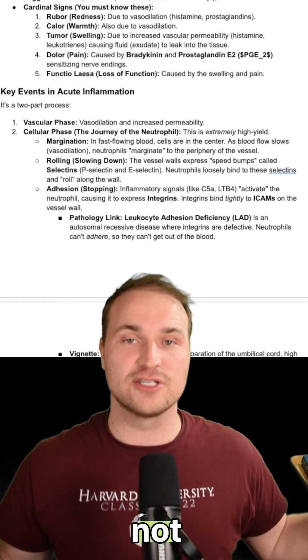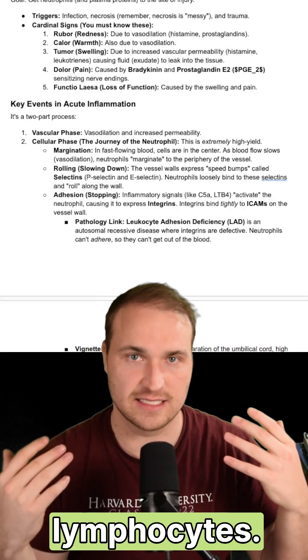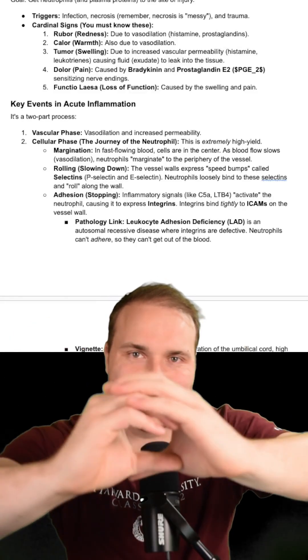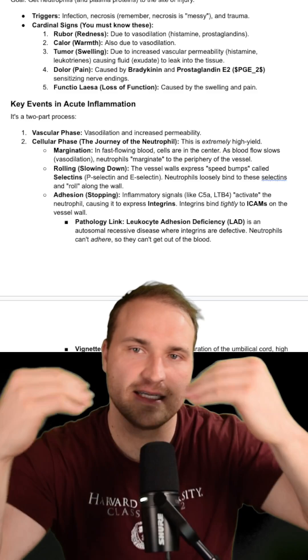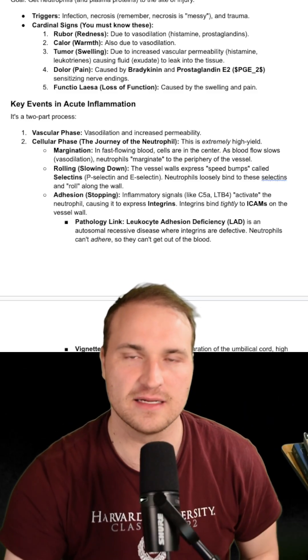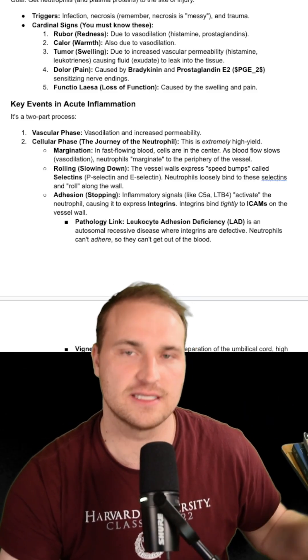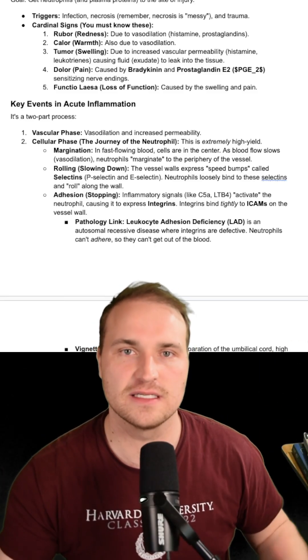If you have chronic inflammation — not acute — think of macrophages and lymphocytes. Granulomas form via Th1 cells that release interferon gamma. Caseating granulomas, think tuberculosis; non-caseating, think sarcoidosis.